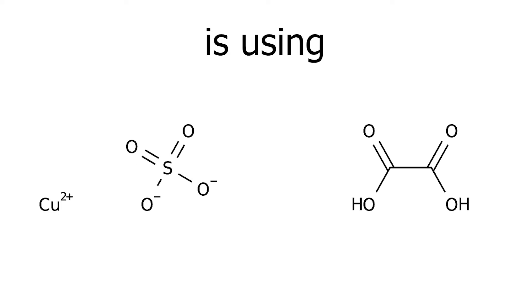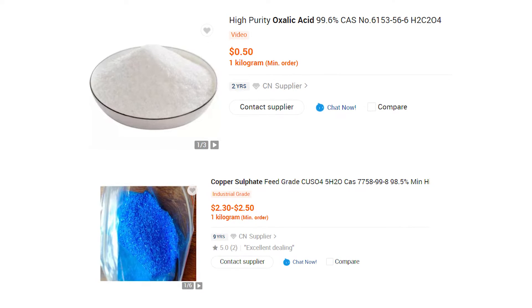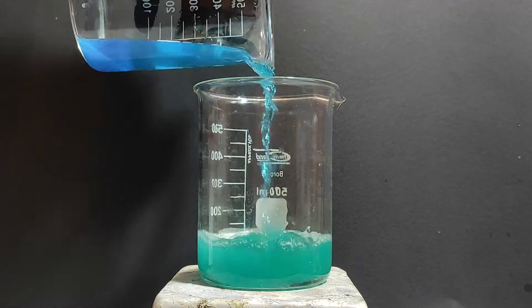However, the easiest and most cost-effective method is using copper sulfate and oxalic acid. Oxalic acid and copper sulfate are cheap, can be bought on any internet store and all it takes is to combine them in a solution.